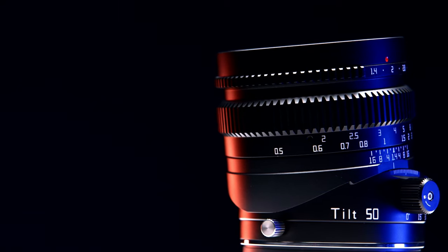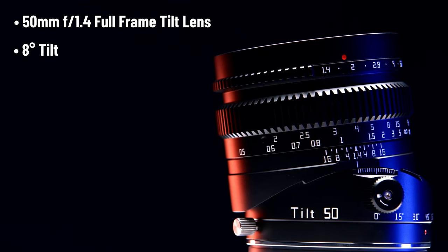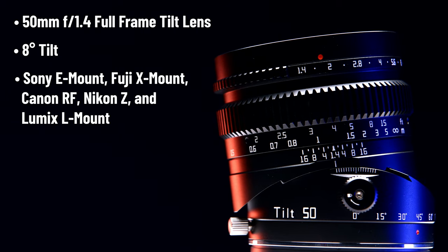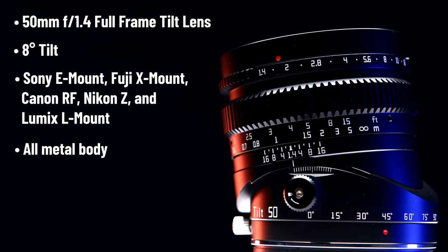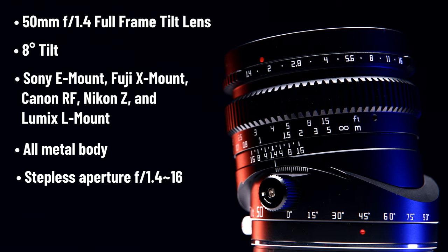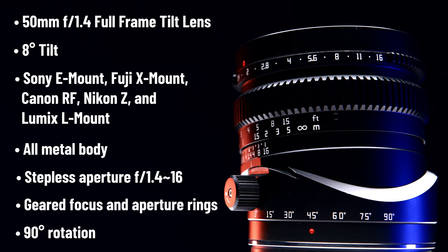What I have today is one of the first L-mount tilt lenses, and this one is by TT Artisan. It's a 50mm f1.4 with an 8 degree tilt angle, and notably this is a tilt-only lens, not a tilt-shift lens. By making a tilt-only lens, TT Artisan was able to make it one of the smallest full-frame tilt lenses on the market and the most affordable — at under $200. The lens is available in Sony E-mount, Fuji X-mount, Canon RF, Nikon Z, and Lumix L-mount. It features an all-metal body, stepless aperture from f1.4 to f16, geared focus and aperture rings for use with a cine follow focus system, and a 90 degree rotation so you can tilt focus along any axis. For a technical analysis of sharpness, bokeh, and chromatic aberration, check out Christopher Frost's video linked below.